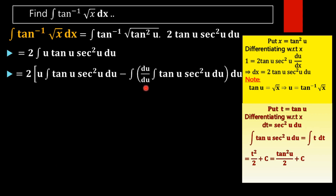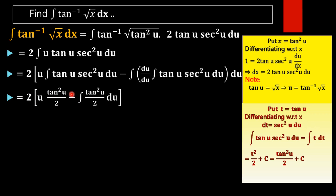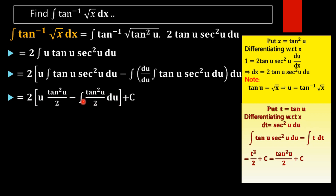Substituting back into the integration by parts formula, du/du = 1, so we get u·(tan²u/2) minus ∫(tan²u/2)·du. Note that 2 is a common factor in both terms, so the 2 from outside and the denominator 2 cancel.